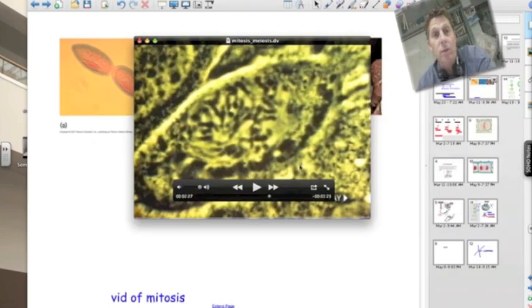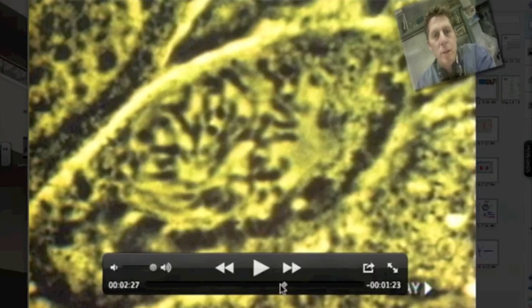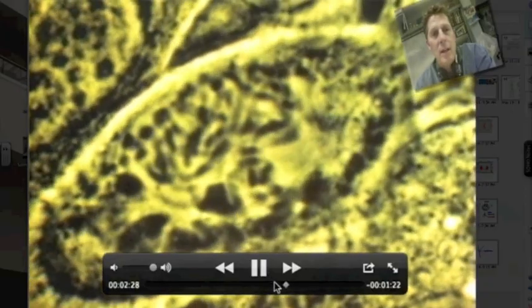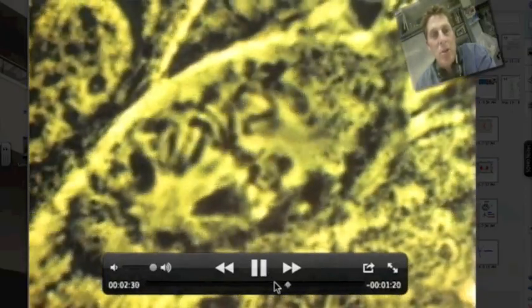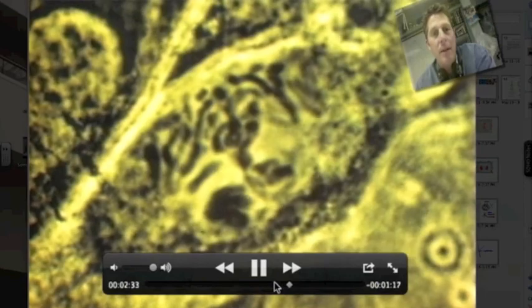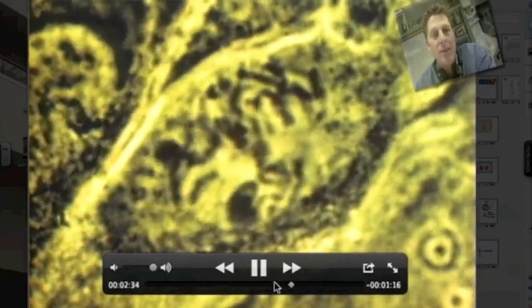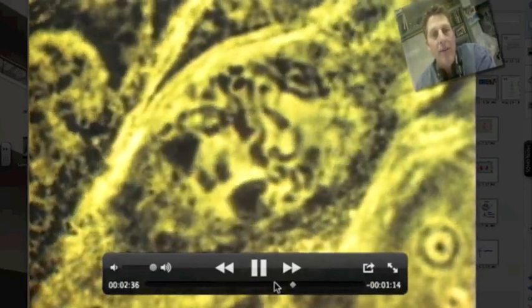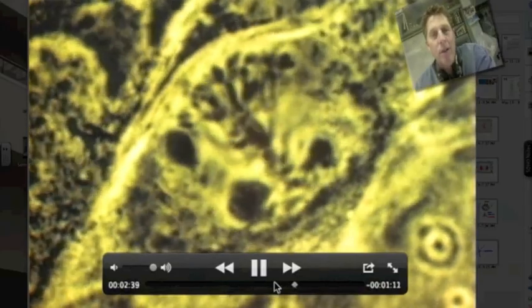Let's look at a cell going through this process of asexual reproduction, which we actually call mitosis. So here we see the cell going through mitosis, going through this cell division. We've already had a duplication of the genetic material. Now we can see this genetic material, these chromosomes, getting lined up in the middle of the cell. We call this alignment.